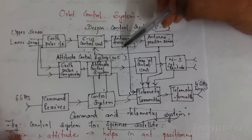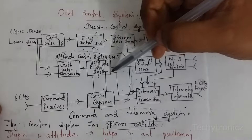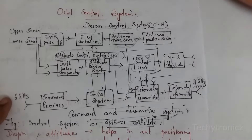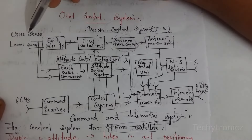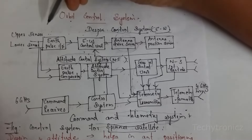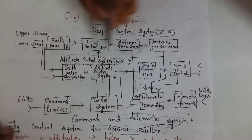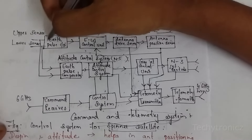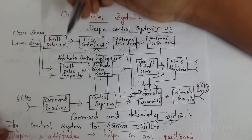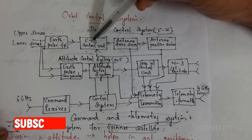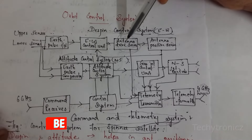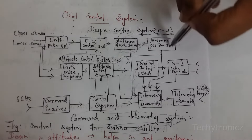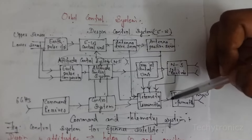In these two systems, the satellite is controlled using communication from the ground station — that is, the command and telemetry subsystem. The satellite uses many sensors to collect information. The earth pulse input information is fed into both the east-west control unit and the attitude control subsystem. From the east-west control unit, the signal goes to the antenna drive servo motor, then to the position sensor, and finally back to the command and telemetry subsystem via telemetry transmitters. Antenna position sensors also feed position information back to the telemetry transmitters.